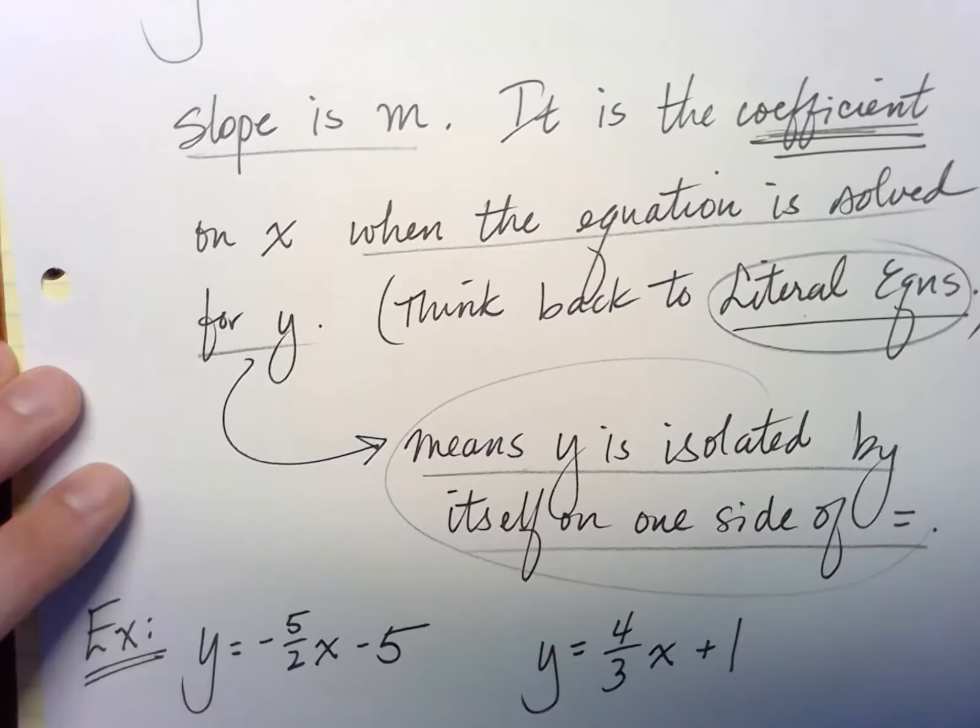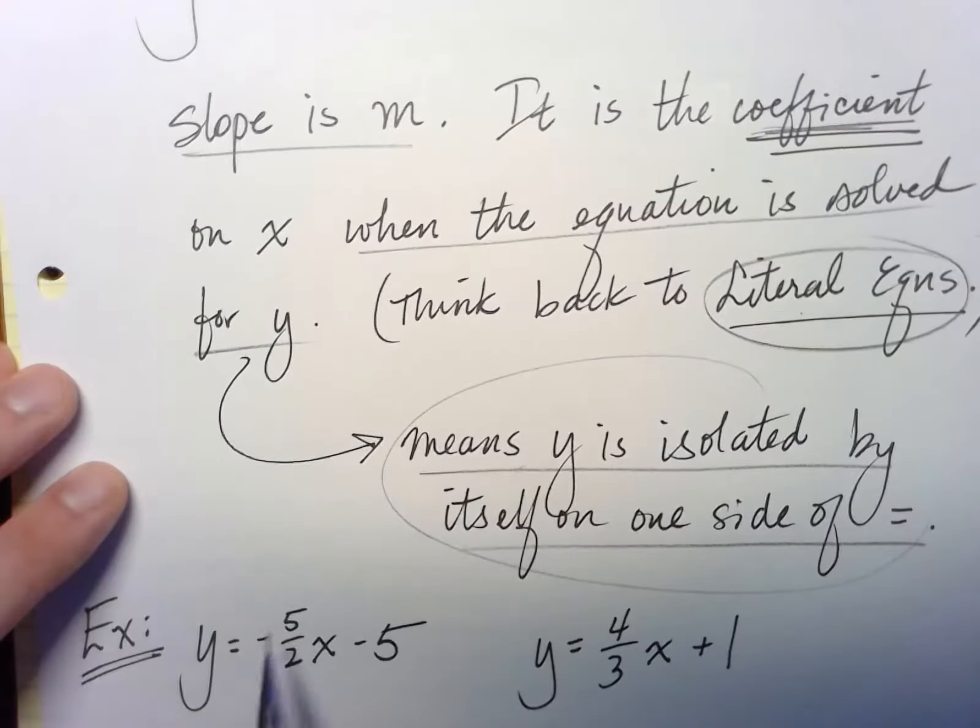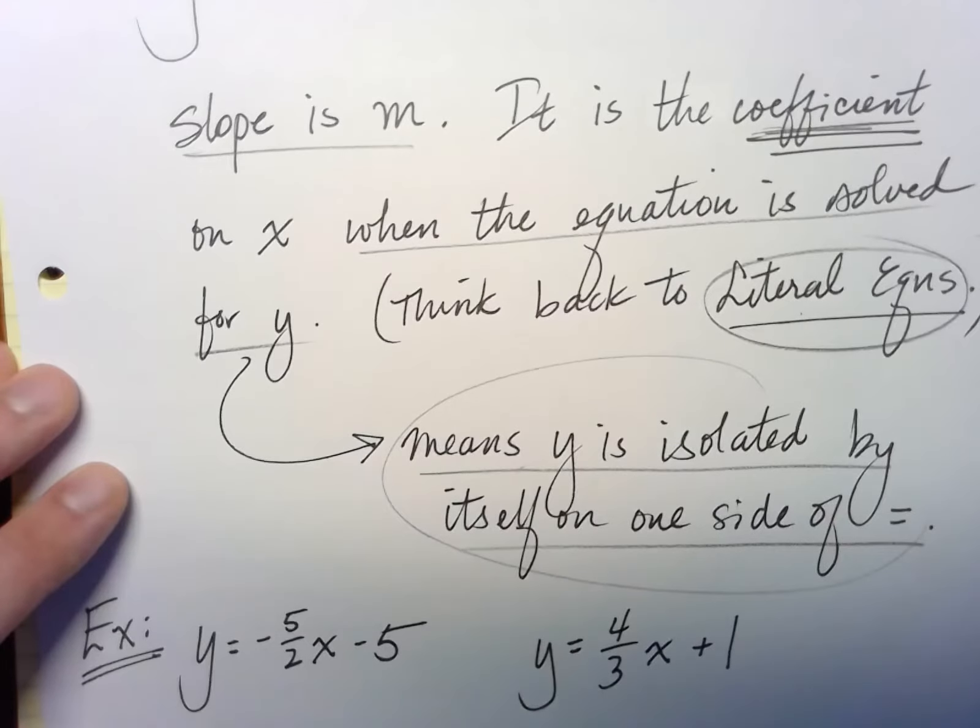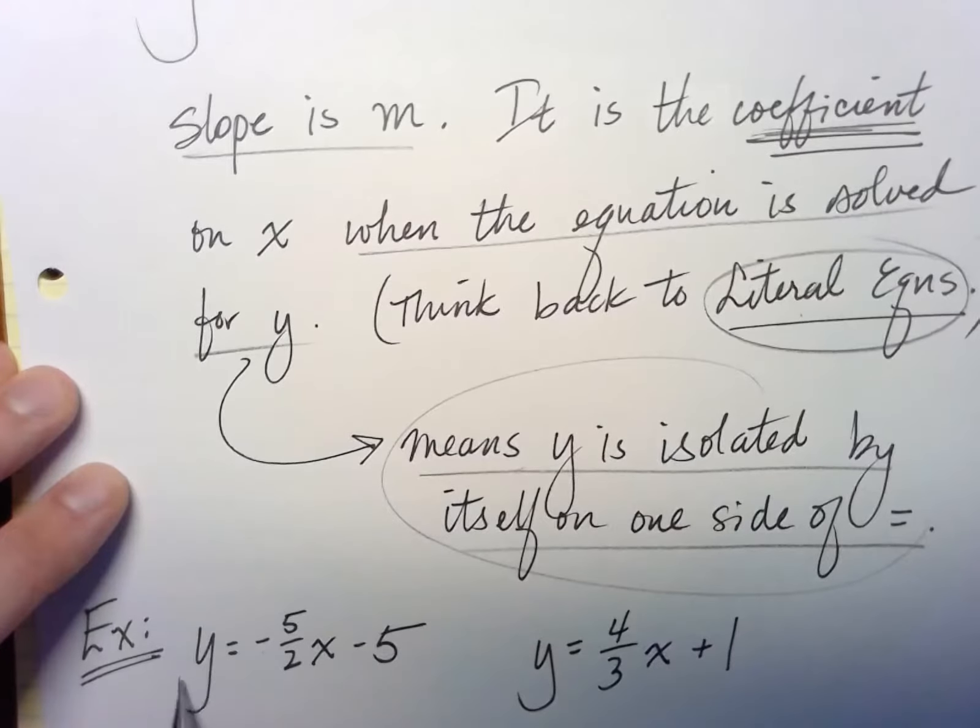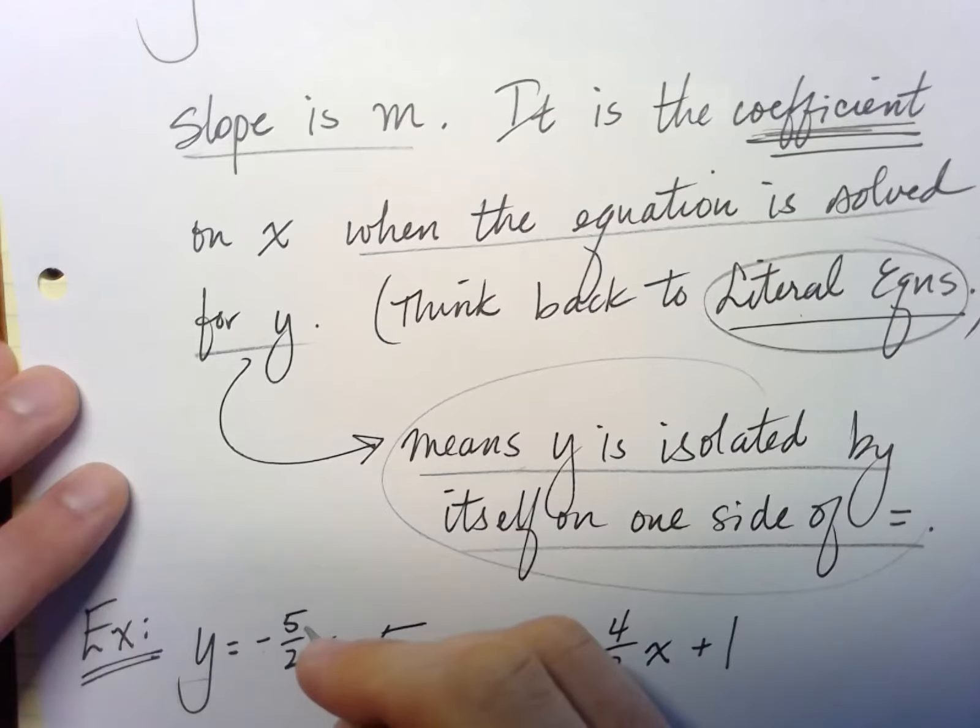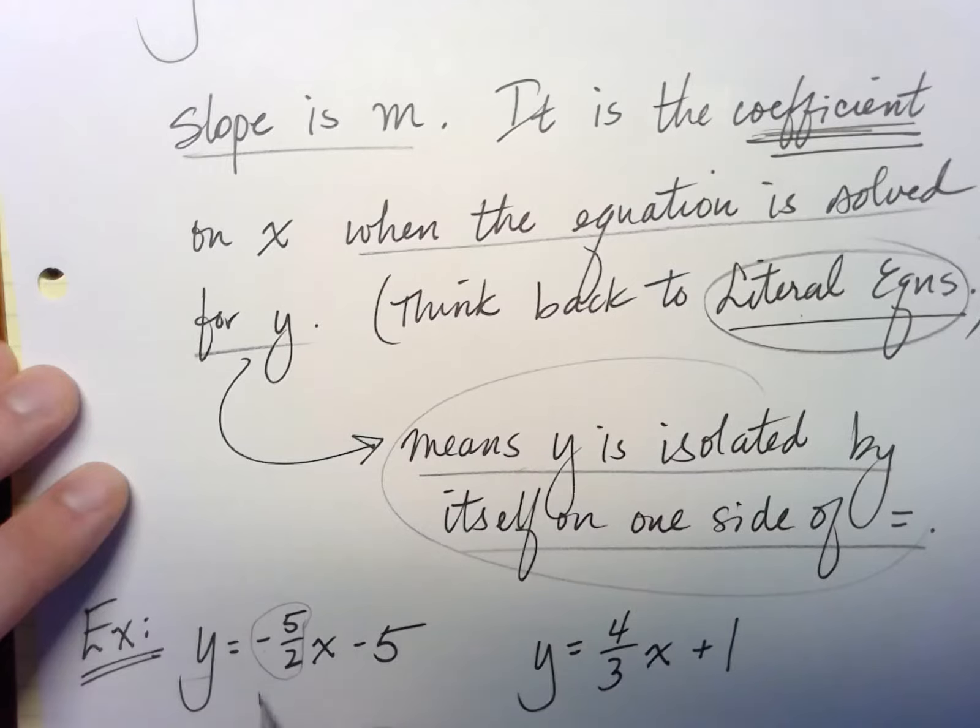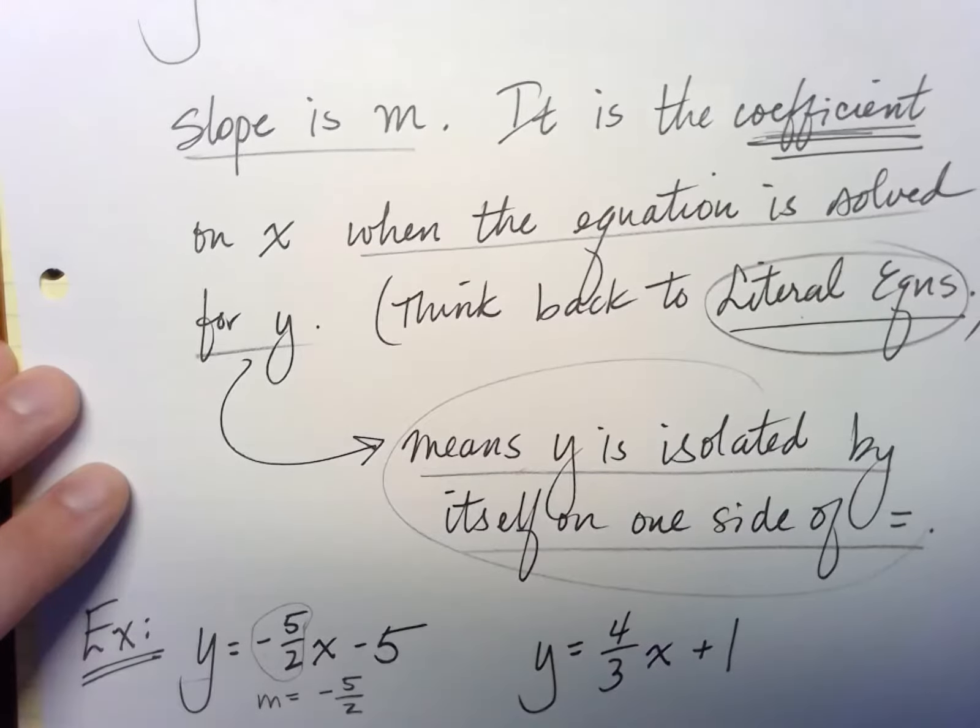All right, so y equals negative 5 halves of x minus 5. We know it's in slope-intercept form because the y is isolated, and so all I need to find the slope is looking for the coefficient on the x. So in this case, m equals minus 5 halves.